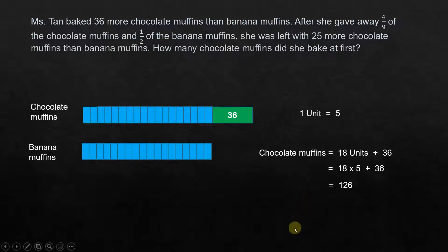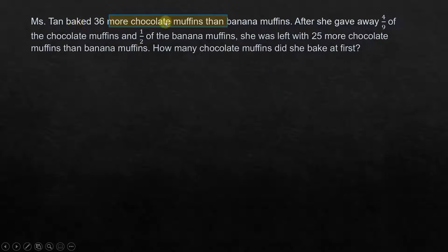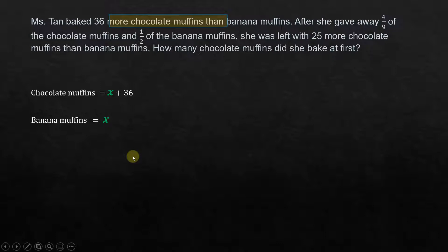Now we move on to algebra — how to solve this problem using algebra. Mrs. Tan baked 36 more chocolate muffins than banana muffins. After she gave away 4/9 of the chocolate muffins and half of the banana muffins, she was left with 25 more chocolate muffins than banana muffins. Since 'more than' refers to banana muffins, let x be the number of banana muffins. Then chocolate muffins equals x plus 36.